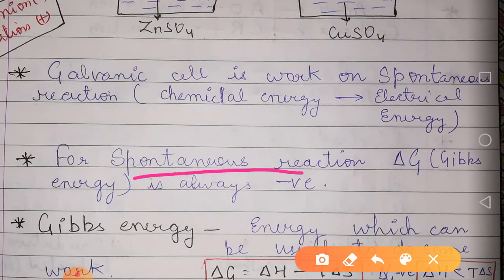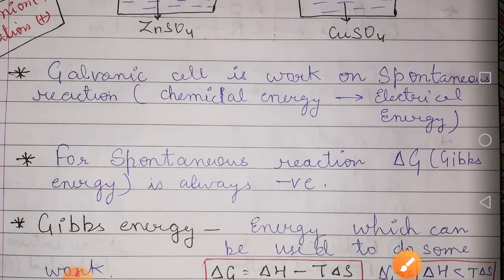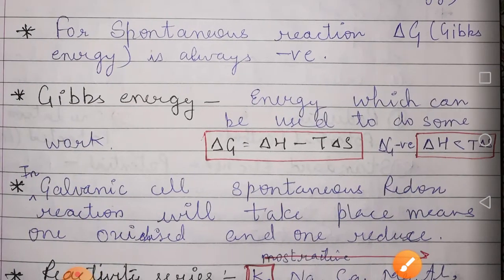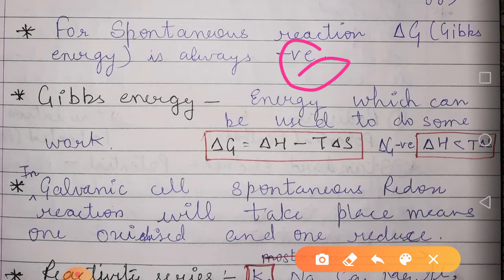In a spontaneous reaction, the value of ΔG is negative. Gibbs energy is the energy which can be used to do some work. ΔG becomes negative when the value of ΔH is less than the value of TΔS, where ΔS is entropy.